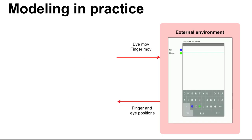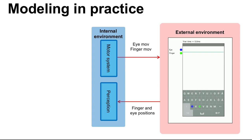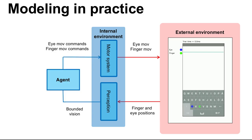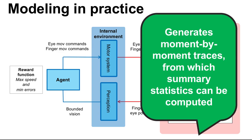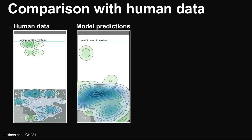How are such models created in practice? We start by modeling an environment that contains the user agent and its surroundings, including the design — for example, the eyes and fingers of a typist operating on a simulated touchscreen interface. Inputs and outputs are processed by the internal environment, such as the motor and perceptual systems, whose outputs are then made available as states for the agent. We further specify a reward function — for example, maximize speed while minimizing errors in the case of typing. After this, we ask a solver to learn a policy. After training, we simulate the learned policy and compute dependent variables of interest, such as trajectories, heat maps, and summary statistics.